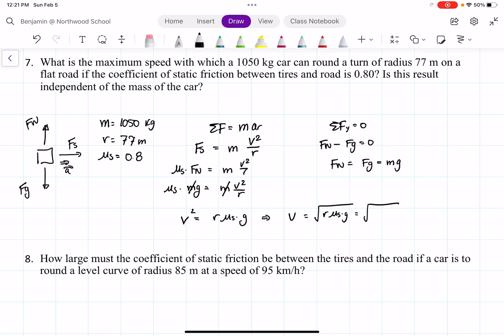Which equals 77 times 0.8 times 9.8, and we get 24.57 meters per second.